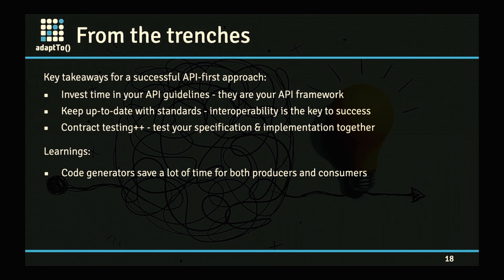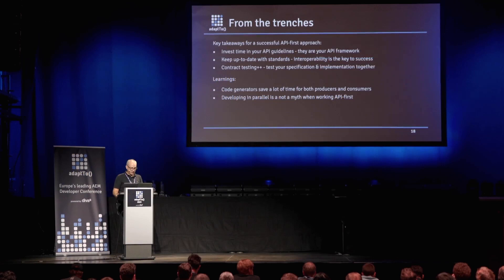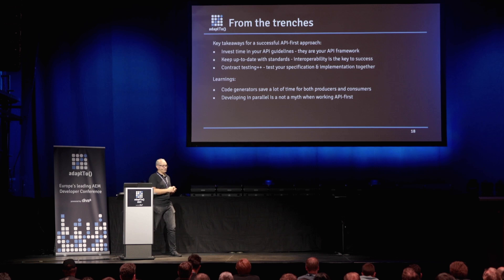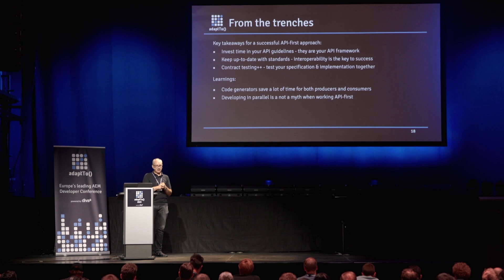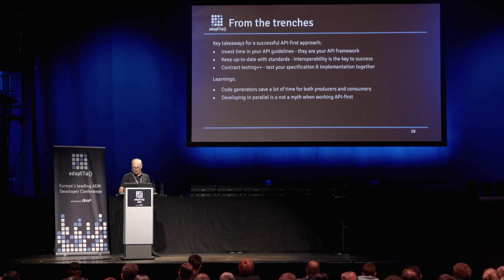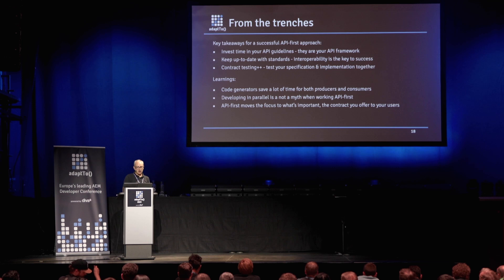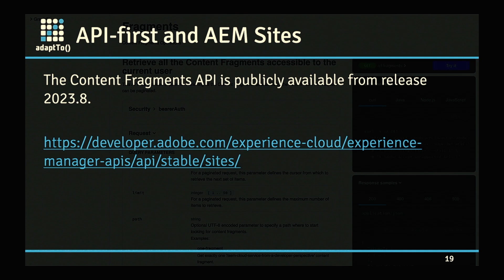If you can generate a spec ahead of time, you can deploy code generators to make sure that whenever you change something, your errors are compile-time errors and not run-time errors — those are the easiest to catch. If there's a code generator for your programming language of choice, use it. Developing in parallel was definitely not a myth. Some of you may have seen the new Content Fragments editor — that was developed using an API first approach. We gave the spec to the UI team, they started writing their components because they knew what they were getting, and once the implementation was ready, they ran their tests against the API. API first moves the focus to what's important: the contract you offer to your users.